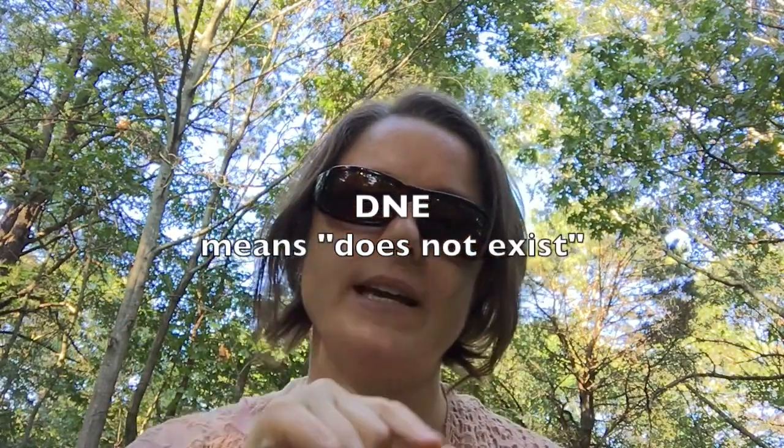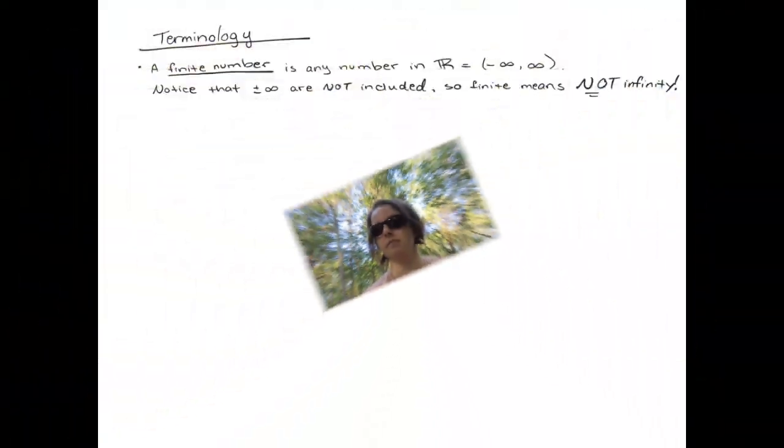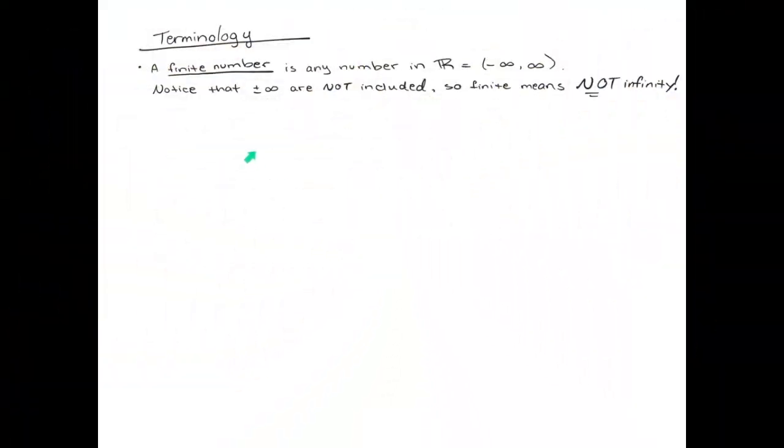Sometimes the limit exists and sometimes it doesn't exist. For doesn't exist, we use the abbreviation DNE. The first bit of terminology is a finite number. Remember that rounded parentheses here are non-inclusive, so we are not including infinity. Any number that's not infinity is called finite.